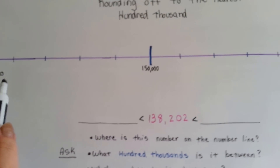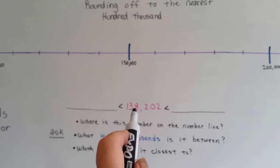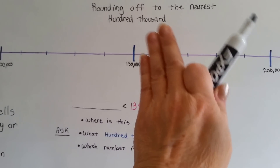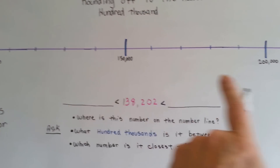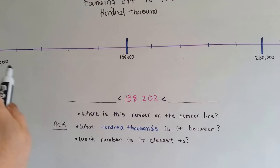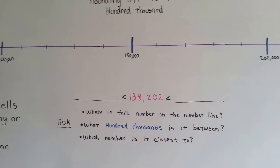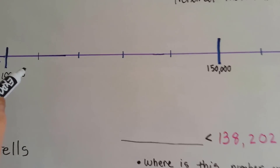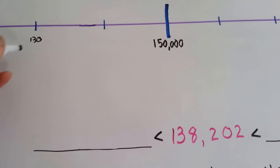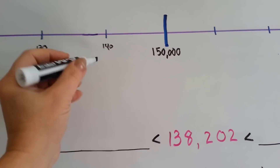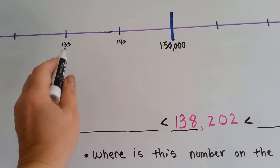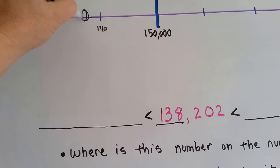Where do you think 138,202 would fall? You can actually take the 202 off and the last three zeros of the 100,000s and just use the 138 to make it easier. So if that was 100 and that was 150, where would 138 be? Well, this is 110, 120, 130 — and that means that's 140. So where would 138 fall? It would fall in between the 130 and the 140, wouldn't it? It would probably be about right there.